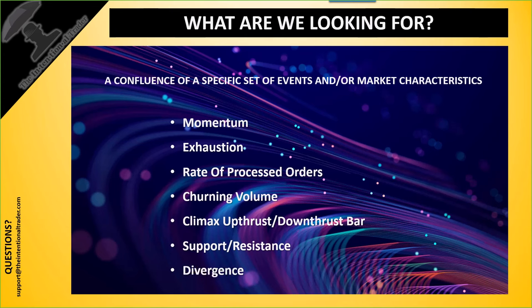If this happens near an area of support or resistance and exhaustion sets in, we can anticipate price will react to that line because it won't be strong enough to cross it. Then here's the kicker — the one that changed the game for us: divergence. On the open of the next bar we'll know if we have divergence of price and momentum. You can search our YouTube site for our divergence webinars to learn more about that.